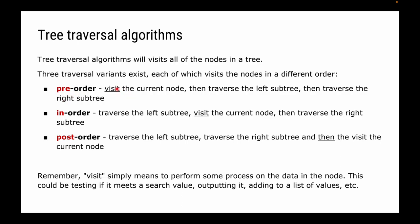Pre-order means we visit the current node first, then we traverse the left, then we traverse the right. In-order traversal searches through the left subtree first — going as far as it can on the left — then visits the current node, then goes as far to the right as it can. A post-order traversal traverses as far as it can down the left, then as far as it can down the right, then visits the current node. Each of these is a recursive function.